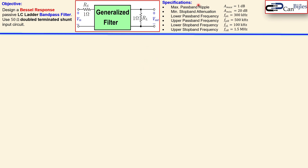The specifications are also given. We have a maximum passband level of 1dB and a minimum stopband attenuation of 20dB. We have a lower passband frequency of 300 kilohertz, an upper passband frequency of 500 kilohertz, a lower stopband frequency of 100 kilohertz, and an upper stopband frequency of 1.5 megahertz.